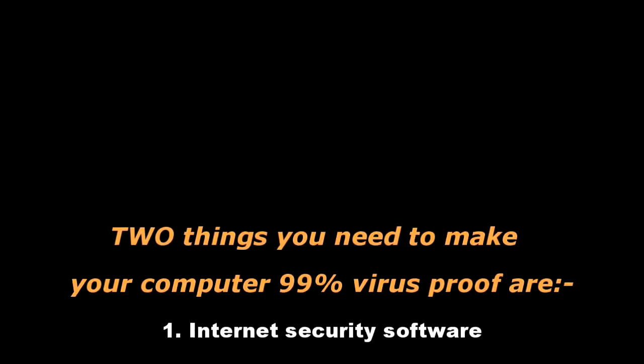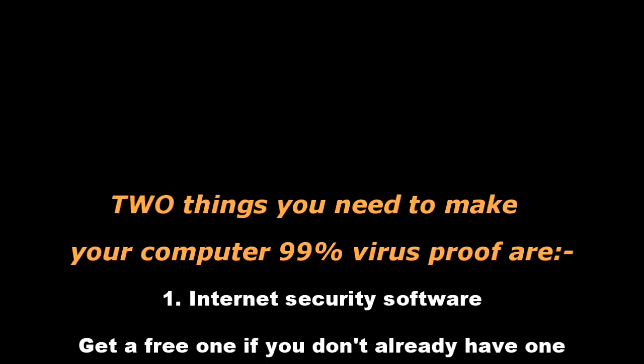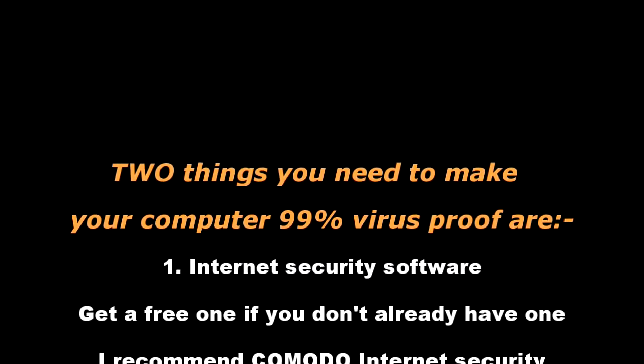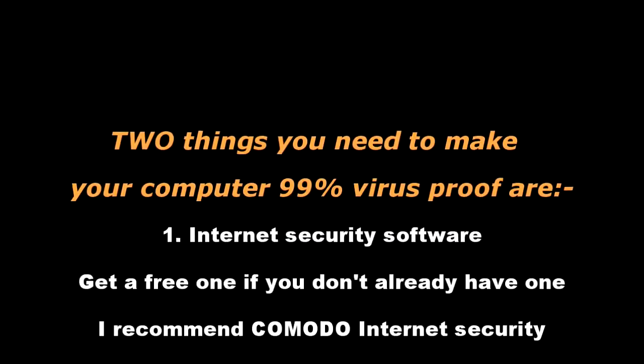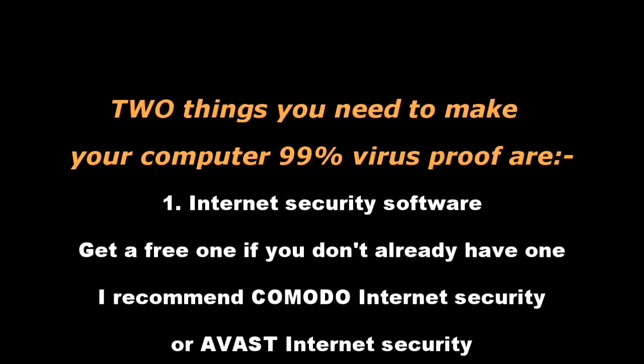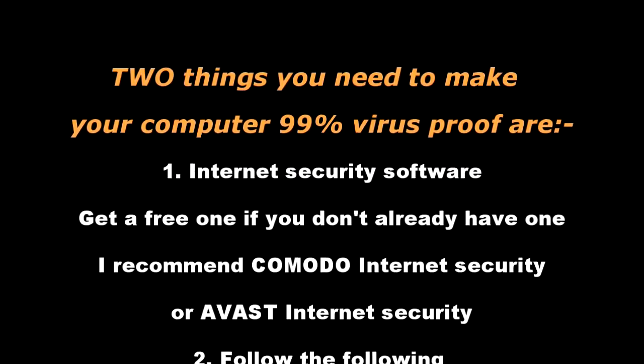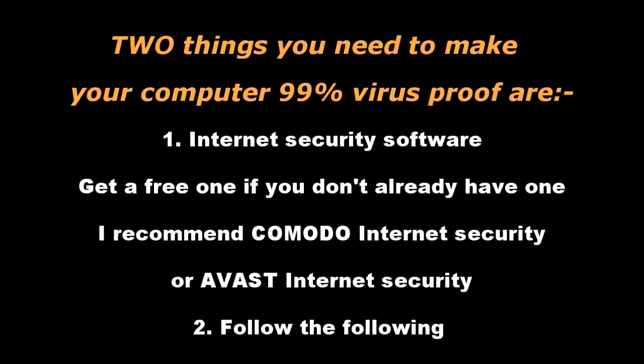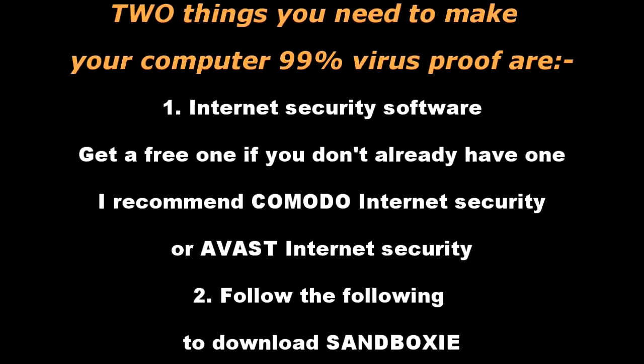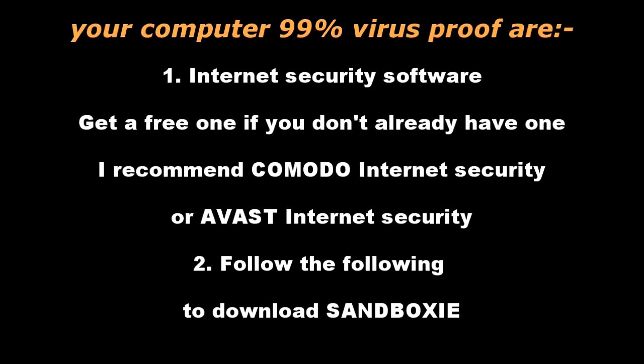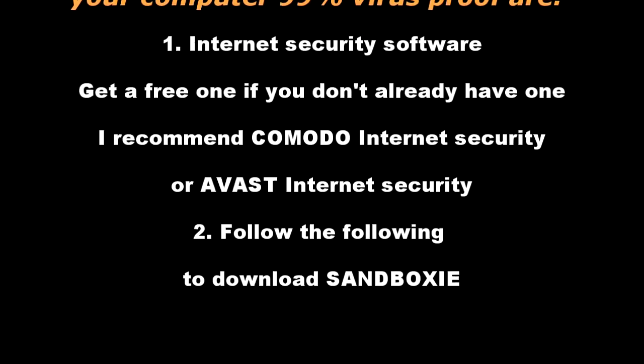Two things you need to make your computer 99% virus-proof: 1. Internet security software. Get a free one if you don't already have one — I recommend Comodo or Avast. 2. Follow the following instructions to download Sandboxie.